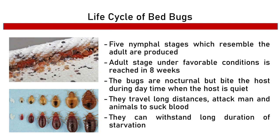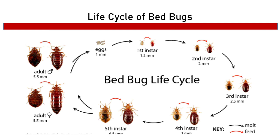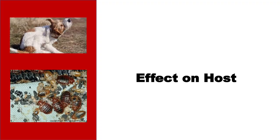In the life cycle of bed bugs, there are five nymph stages which resemble the adult. The adult stage under favorable conditions is reached in eight weeks. The bugs are nocturnal but will bite the host during daytime when the host is quiet. They travel long distances and attack men and animals to suck blood. They can withstand long durations of starvation; although it only takes five to ten minutes to feed, they are able to survive for several months without a blood meal.